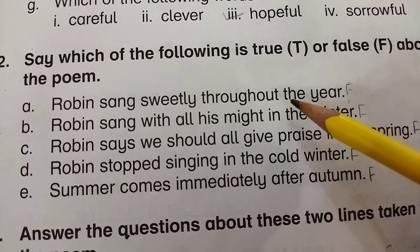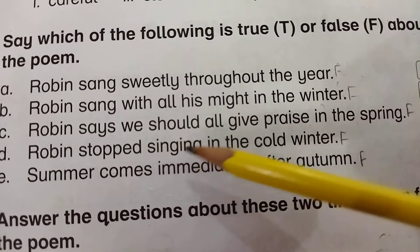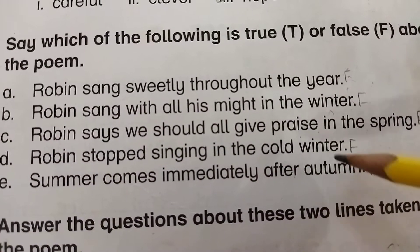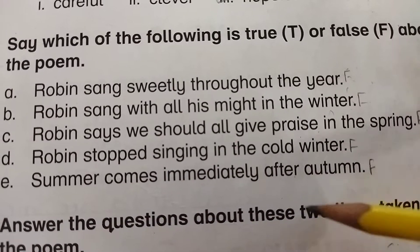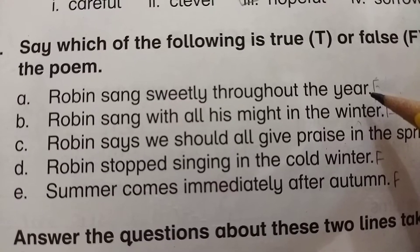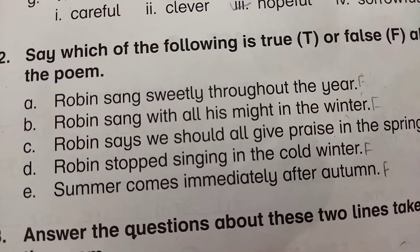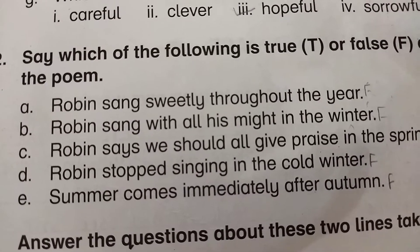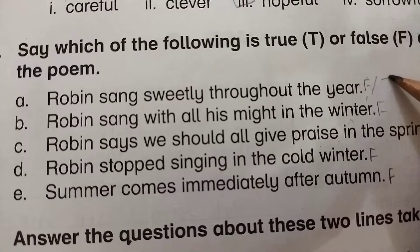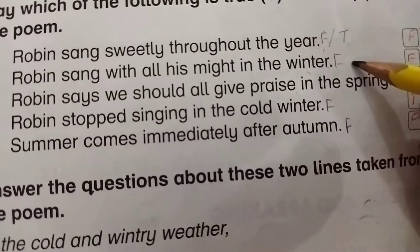However, statement number 1 is somewhat ambiguous. Robin sang sweetly throughout the year because he never sang with sorrow at any point in time. So you could write statement 1 as true also. But all the other four statements are clearly false.